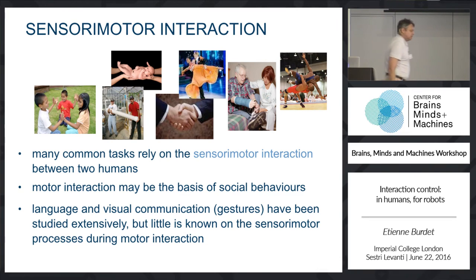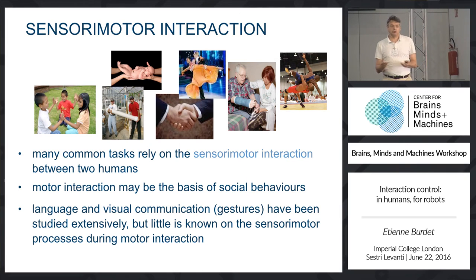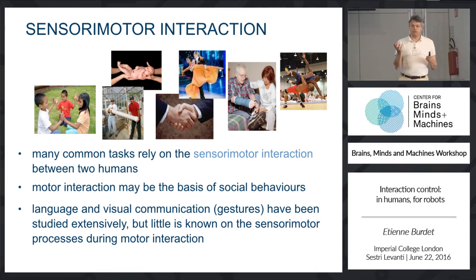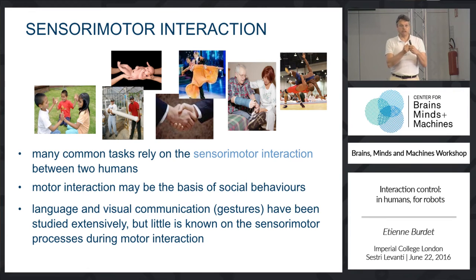Language and gesture involve a discrete message followed by a response. Here you have continuous interaction all the time, and from that continuous interaction you may be able to exchange information and communicate. With language or gesture, you send a message and get a response. With physical interaction, it is continuous — so can you exchange any information from it?